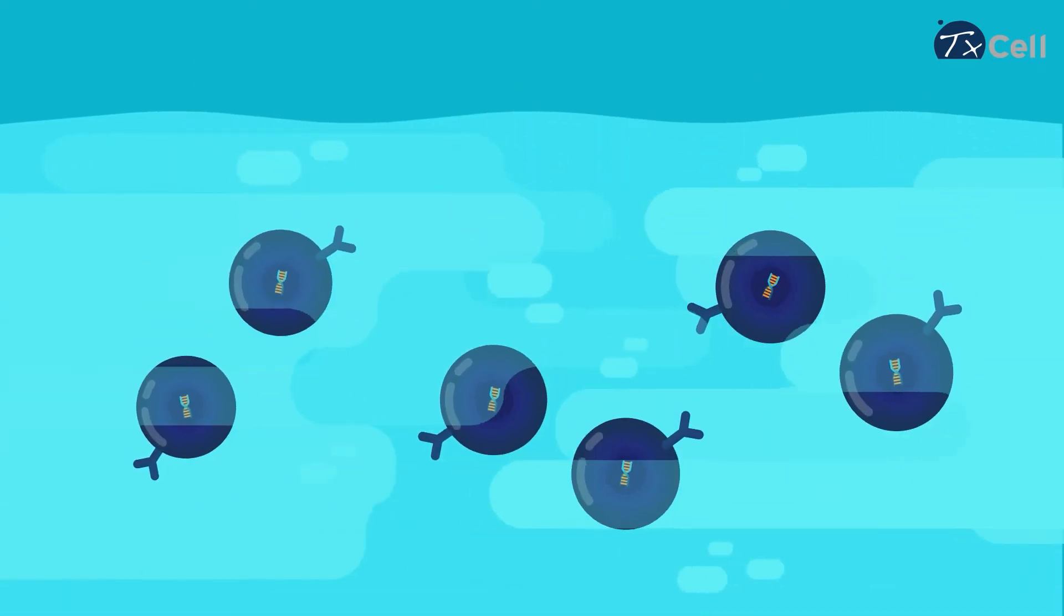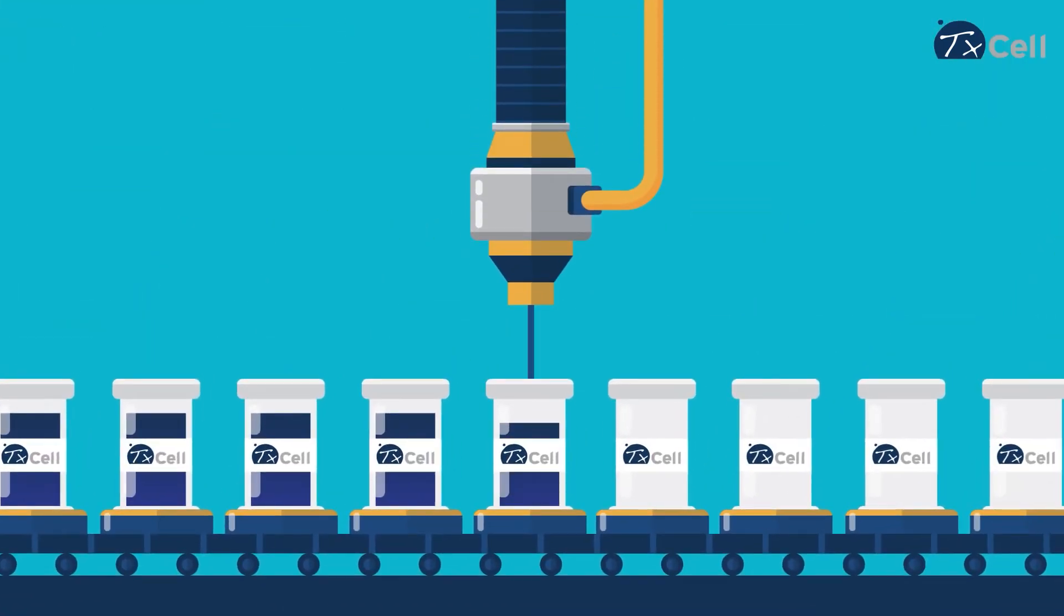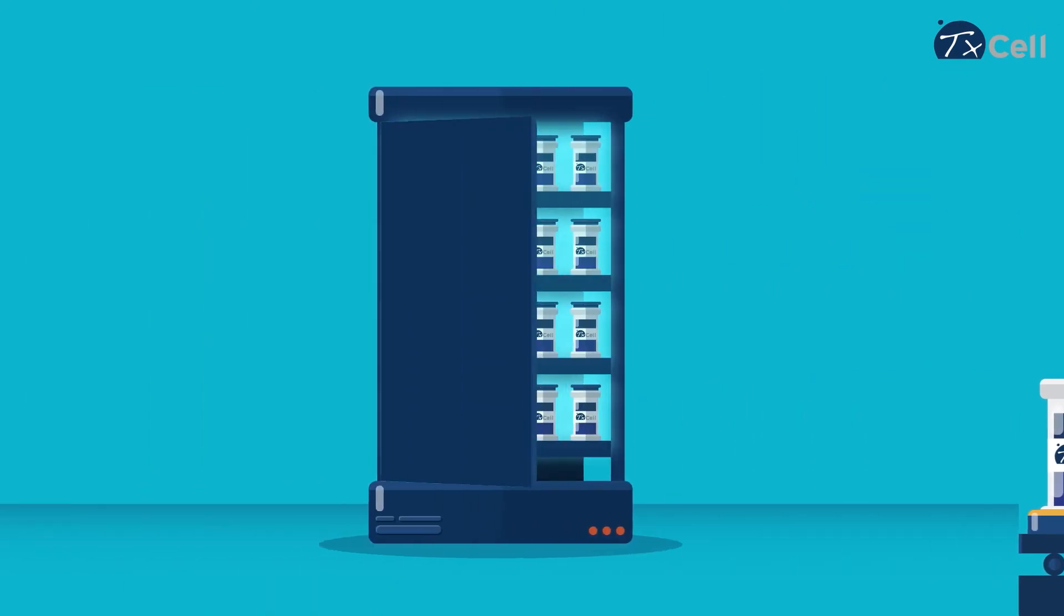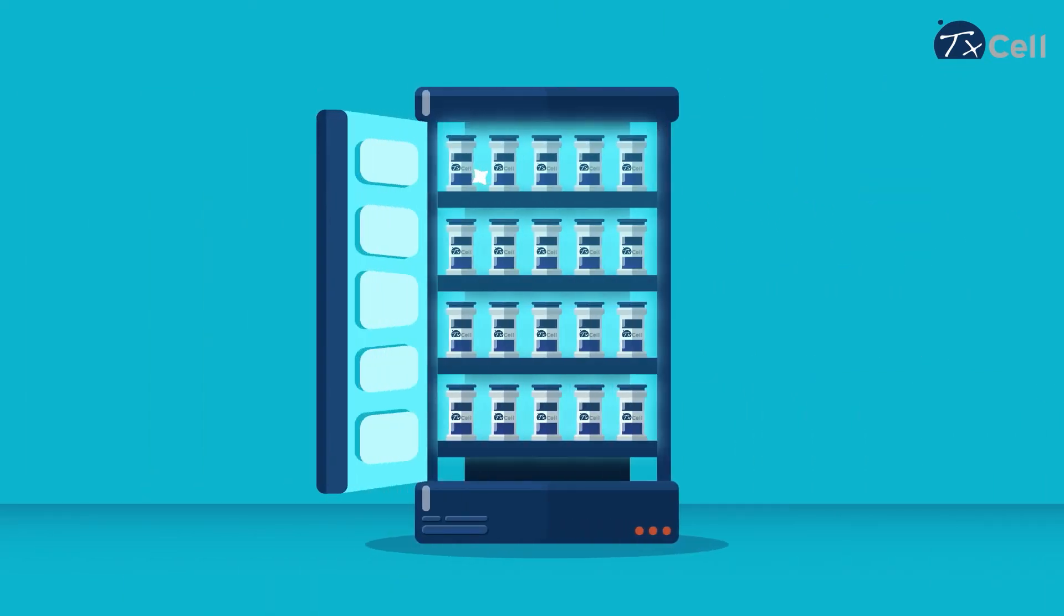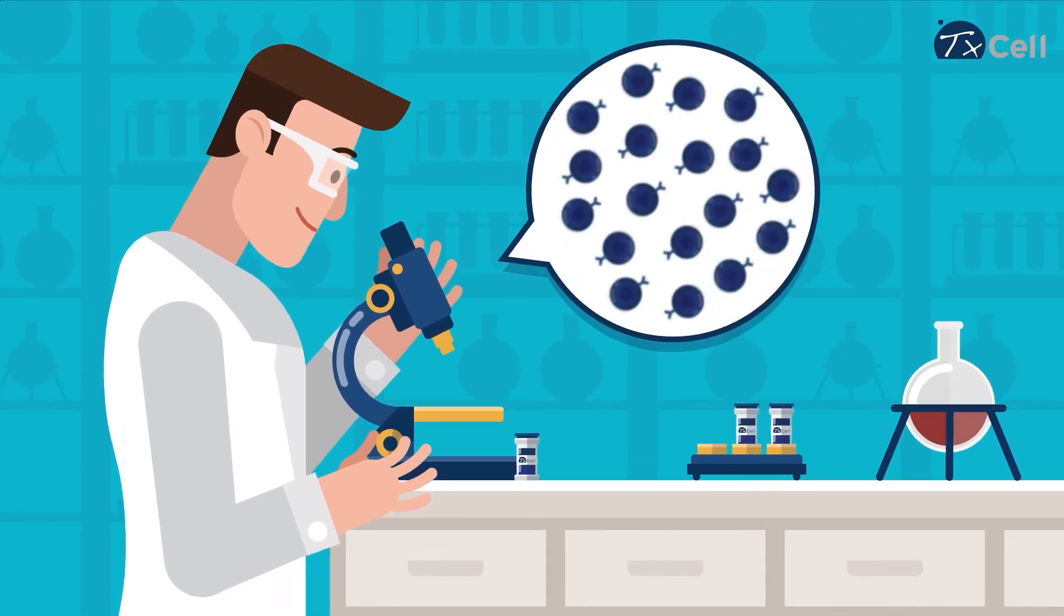The cells are purified and formulated with a cryopreservative milieu. The CAR T-regs cells are then filled into vials. The bulk of the production is frozen and stored in the manufacturing facility and a specific volume is put aside for quality control.